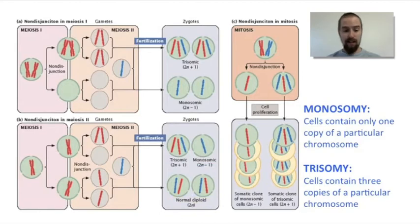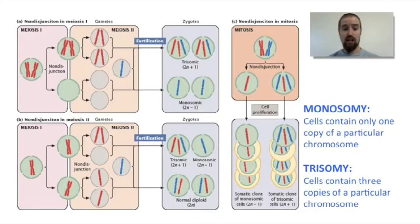The effects of these kinds of chromosomal abnormalities depend on which chromosome was affected by non-disjunction, but the effects are fairly serious in almost all cases. Remember, chromosomes contain hundreds, even thousands of genes. So when one is missing, or when an extra one is present, that's a big change in the information content of the cell.